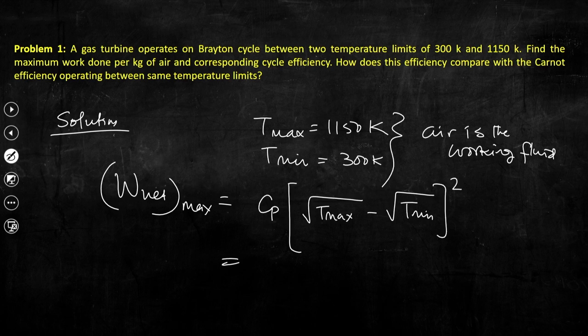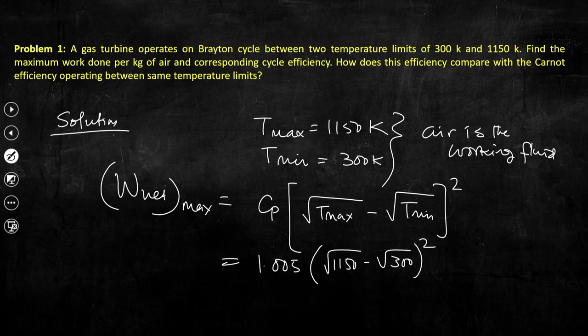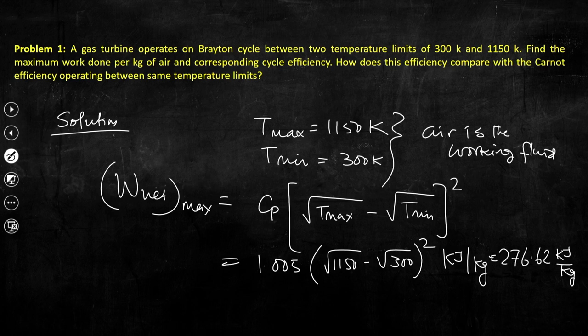Plugging in the value of Cp = 1.005 kJ/kg·K for air: W_net_max = 1.005 × (√1150 − √300)², which comes out to 276.62 kJ/kg. This is the maximum work corresponding to the optimum pressure ratio, since achieving the maximum pressure ratio is not easily feasible.